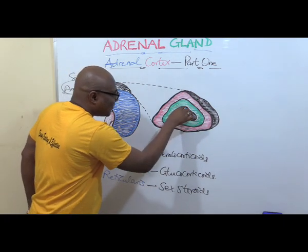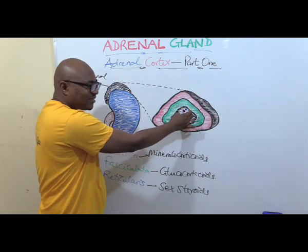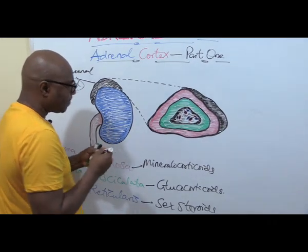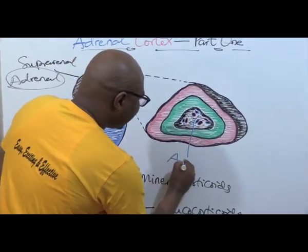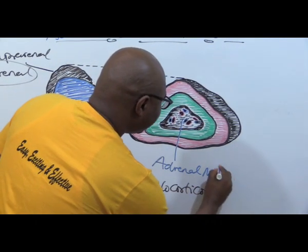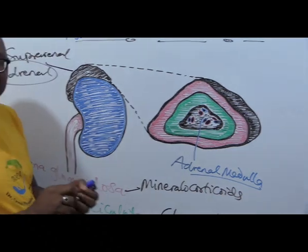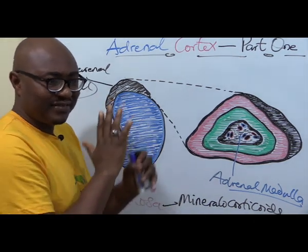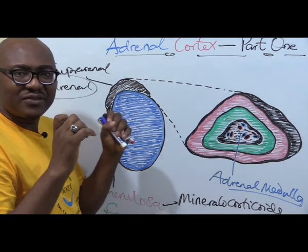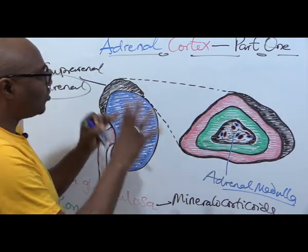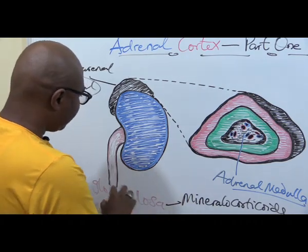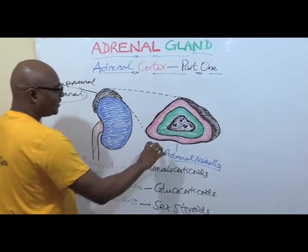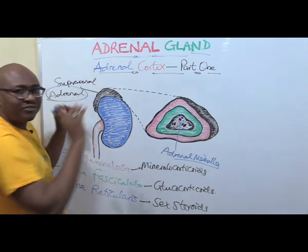Then at the very middle, making up just about 20%, is the adrenal medulla. That part secretes what is known as catecholamines, which have very similar functions to the sympathetic nervous system. In this lecture we're going to be dealing mainly with the mineralocorticoids, the glucocorticoids, and the catecholamines under the adrenal gland.